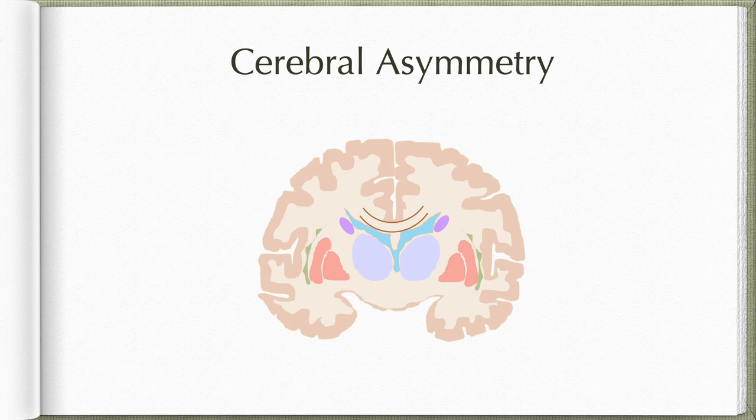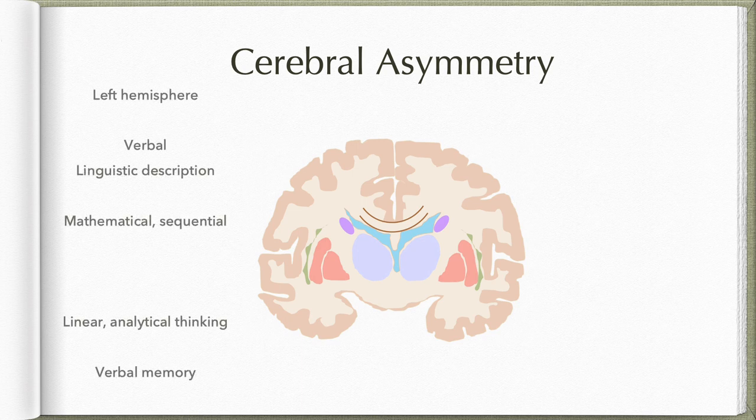When we say cerebral asymmetry, there are certain functions which the left hemisphere is capable of and the right is not, and vice versa. So let us find out what they are.